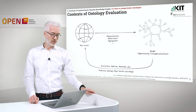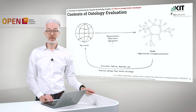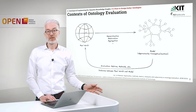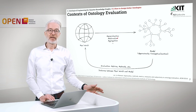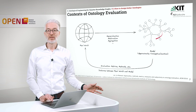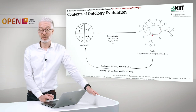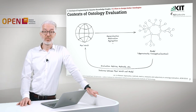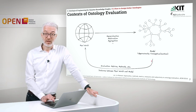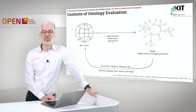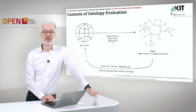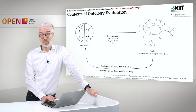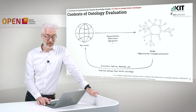Looking again at the context of ontology validation or evaluation, we have the real world. From that real world, by generalization, abstraction, and aggregation, we build our model, which is an approximate conceptualization of the world — not the real world, because we have stripped away everything we don't need for our specific purpose. This model again has to be evaluated against the real world. For that evaluation we will need metrics, methods, and so on. What we have to calculate is the distance between the real world and the model, and whether it fits our purpose.